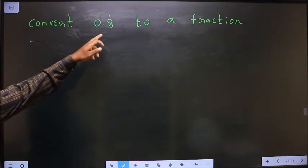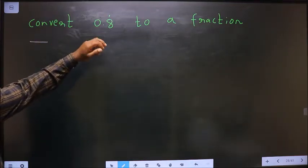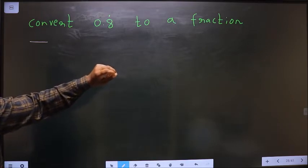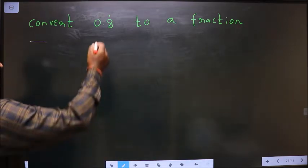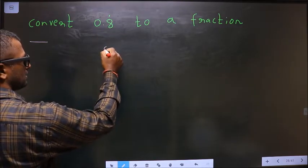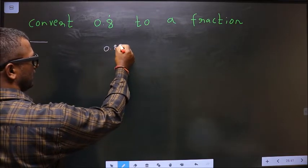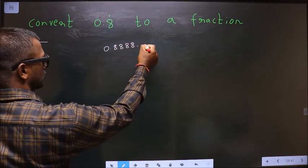Convert 0.8 dot is on 8 to a fraction. Dot is on 8 means 0.8888 and so on. Dot is present on whatever number, that number keeps on repeating.